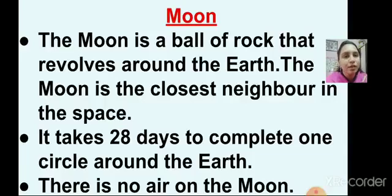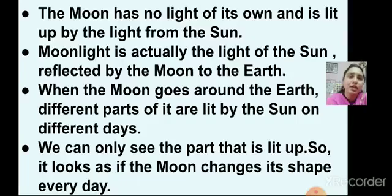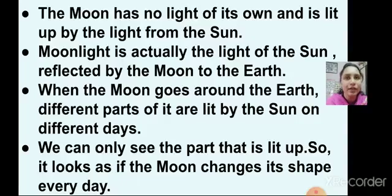The moon has huge holes on it. There is no air on the moon. The moon has no light of its own and is lit up by the light from the sun. So moonlight is actually the light of the sun reflected by the moon to the earth. When the moon goes around the earth, different parts of it are lit up by the sun on different days.